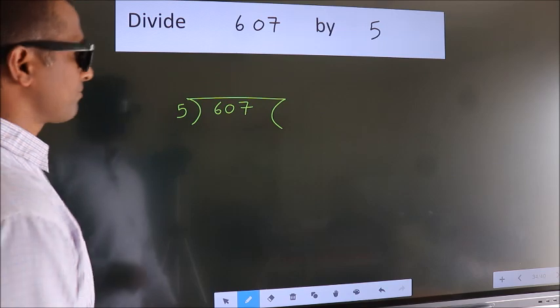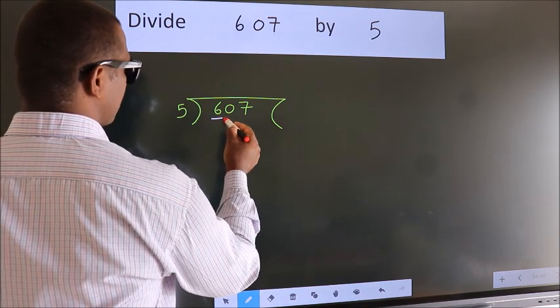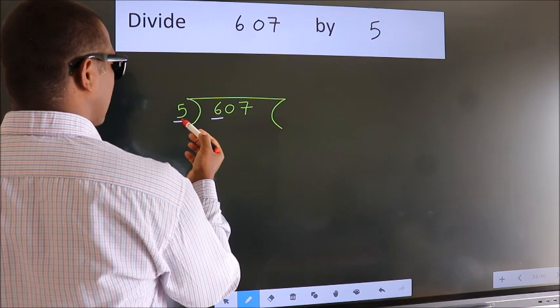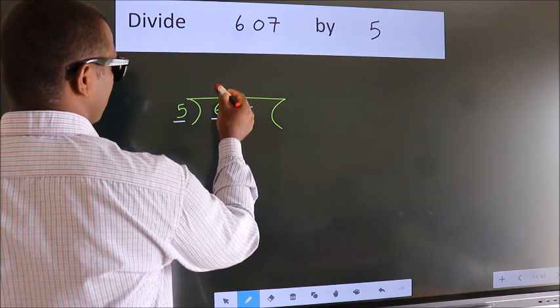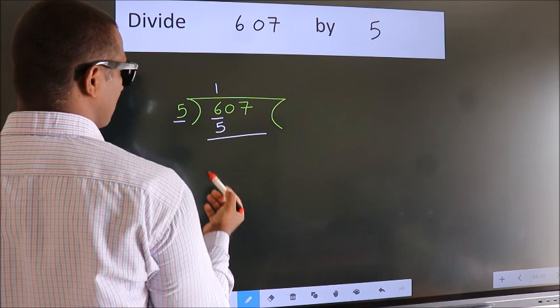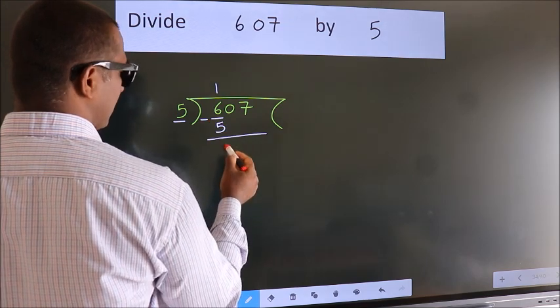Next. Here we have 6, here 5. A number close to 6 in 5 table is 5 ones, 5. Now we should subtract. We get 1.